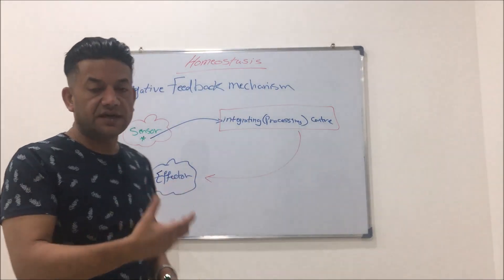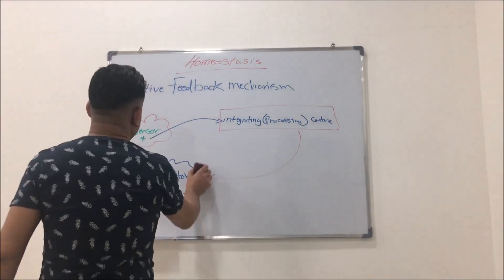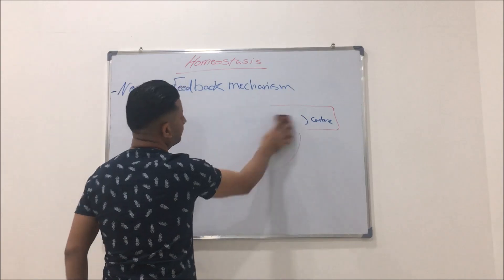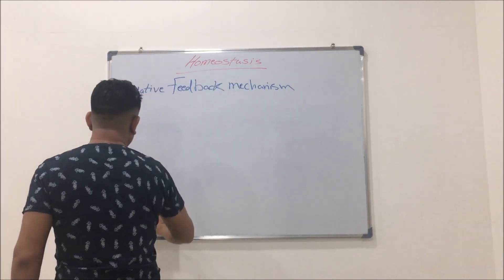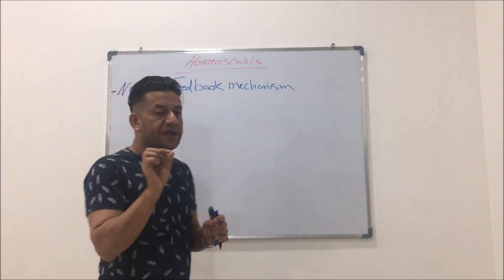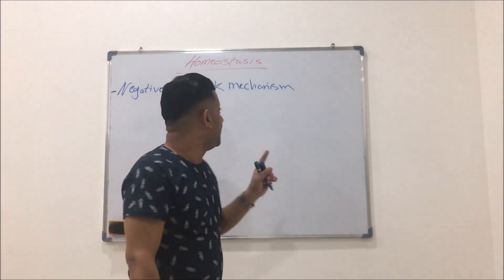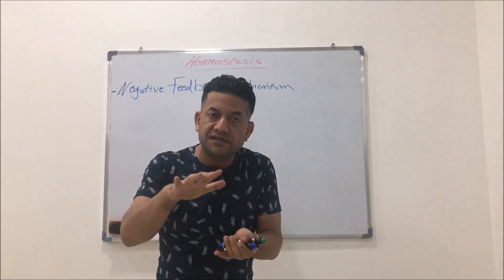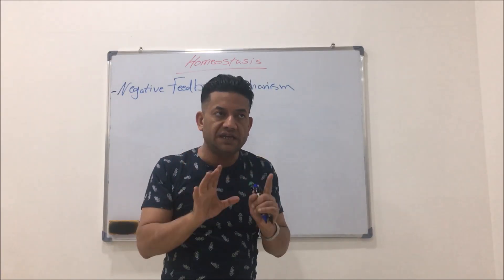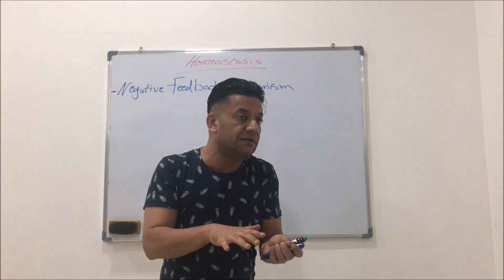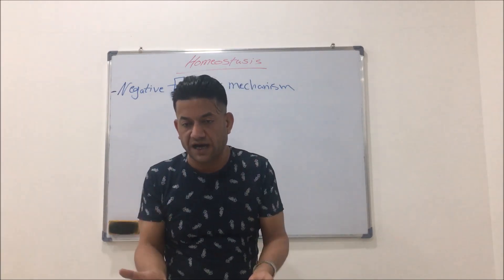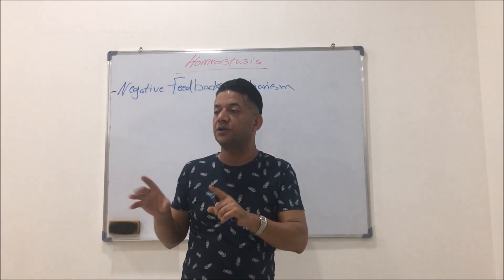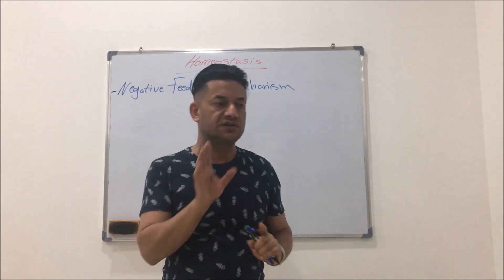Let's look at many examples about the negative feedback mechanism. Keep in mind that negative does not mean a decrease in action. Negative feedback means opposition — opposition to the major action which is done by the stimulus.